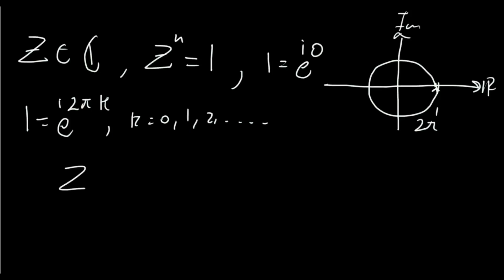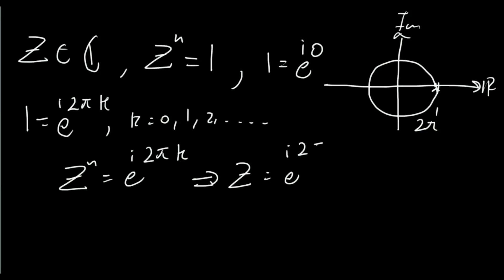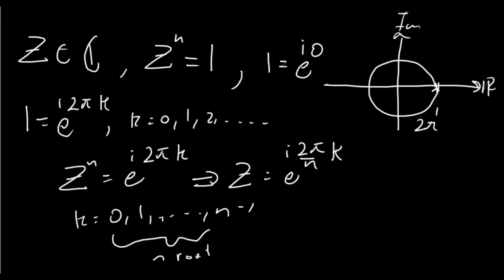So we can take this form and substitute it back into the equation we're trying to solve: z to the n is equal to e to the i 2πk for some integer k. Then we just take both sides to the power 1 over n, which gives us that z is equal to e to the i 2π over n times k. Because we're dealing with an nth order polynomial, it must have at most n roots, so k will start at 0 and run up to n minus 1, giving us exactly n roots.